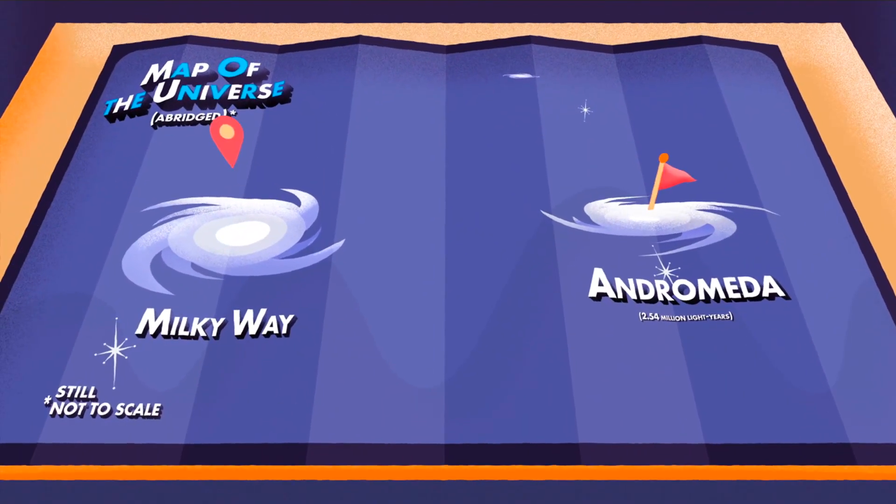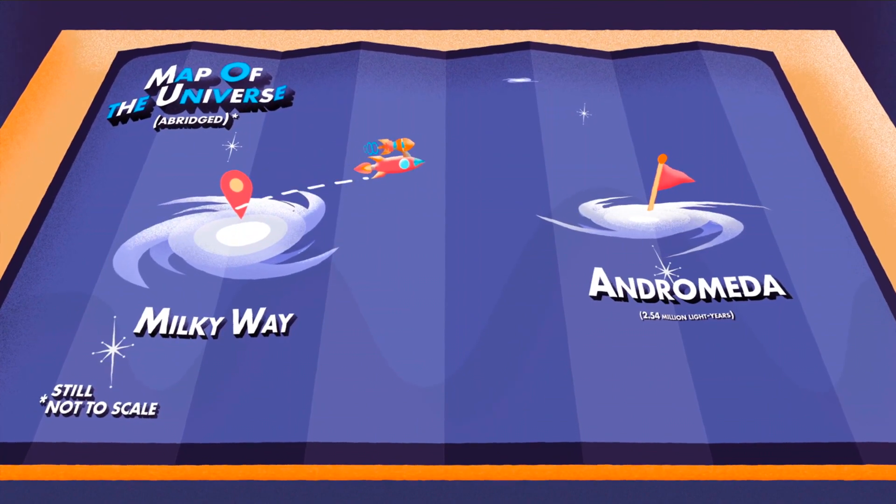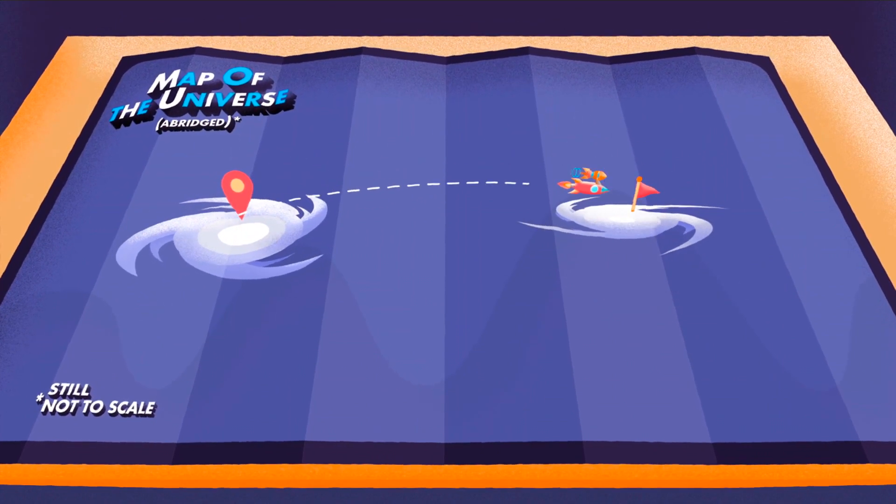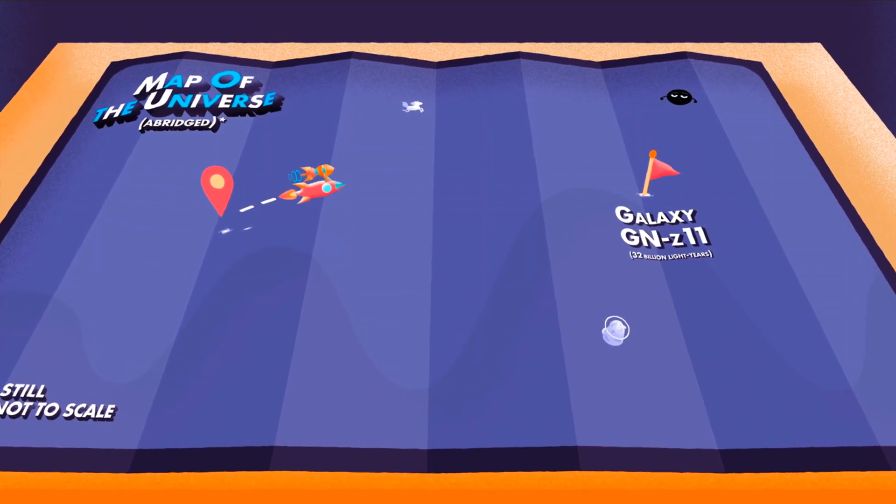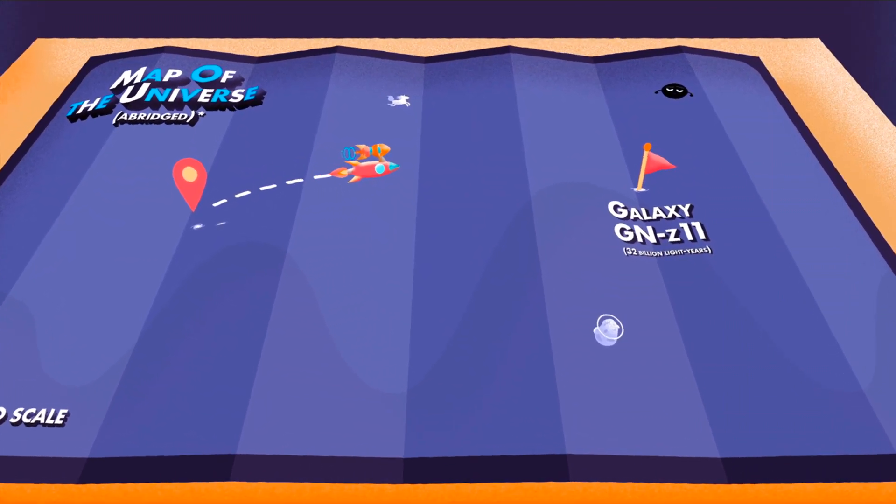A trip to the Andromeda galaxy, our nearest large neighbour galaxy, could take over a million years, and a trip to the farthest known galaxy, where it currently is, might take over 15 billion years, which is more vacation time than I think I'll ever have.